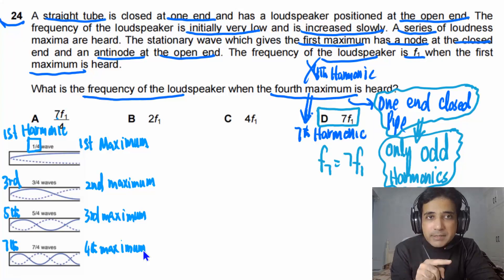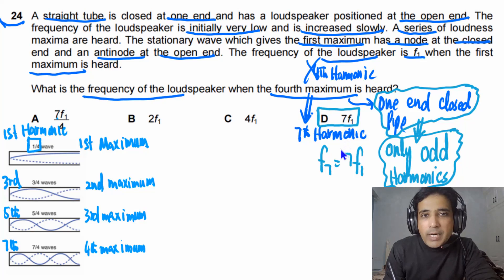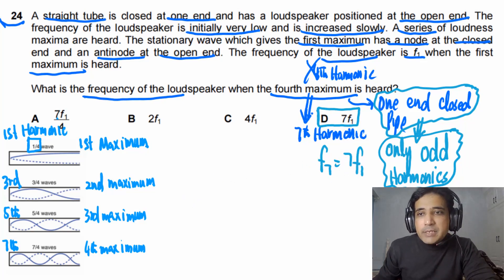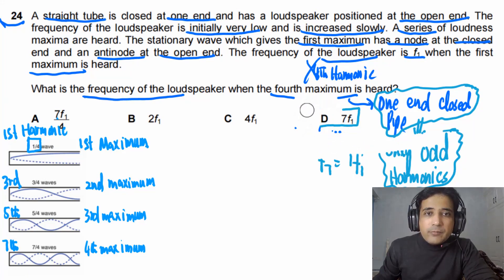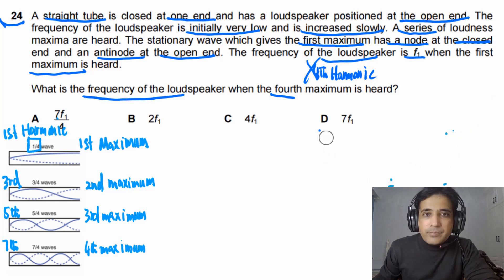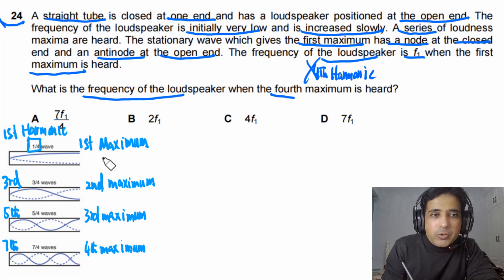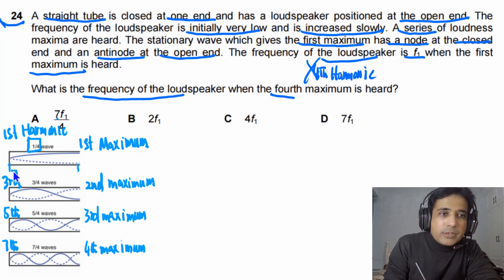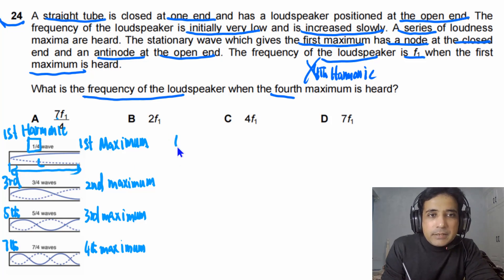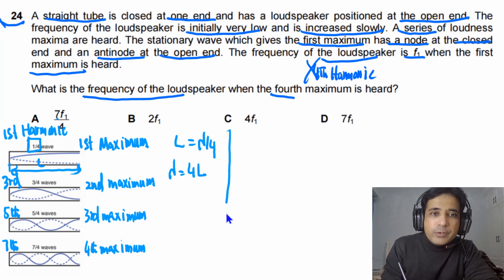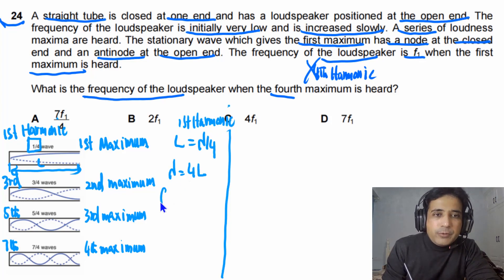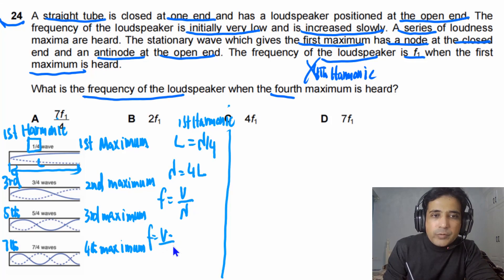Now let's derive why F7 equals 7F1. For the first harmonic, if the pipe length is L, then L equals λ/4, so λ equals 4L. The frequency F1 equals v/λ, which gives F1 equals v/(4L). For the third harmonic (second maximum), L equals 3λ/4, so λ equals 4L/3, and F3 equals v/(4L/3) equals 3v/(4L) equals 3F1.